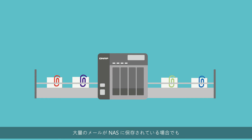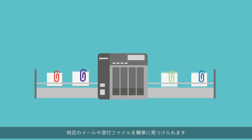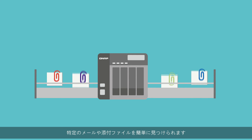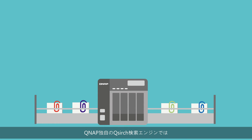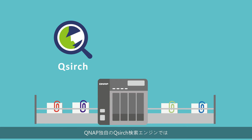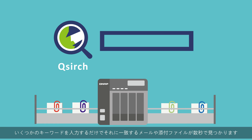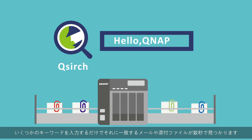Even with a huge amount of emails stored on your NAS, it is never a problem to quickly find specific emails or attachments by using QNAP's proprietary QSearch search engine. Just type in a few keywords and matching emails and attachments will be found within seconds.